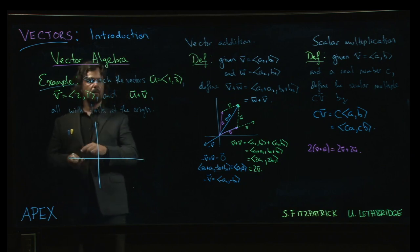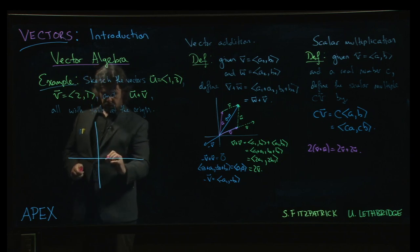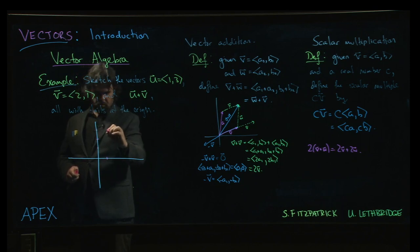How's that going to look? Let's see. So, first the vector u, 1, 3, so over 1, up 1, 2, 3. It's going to look something like that.